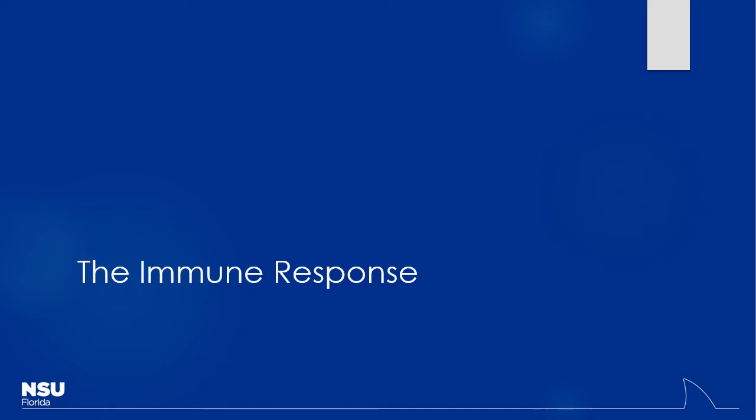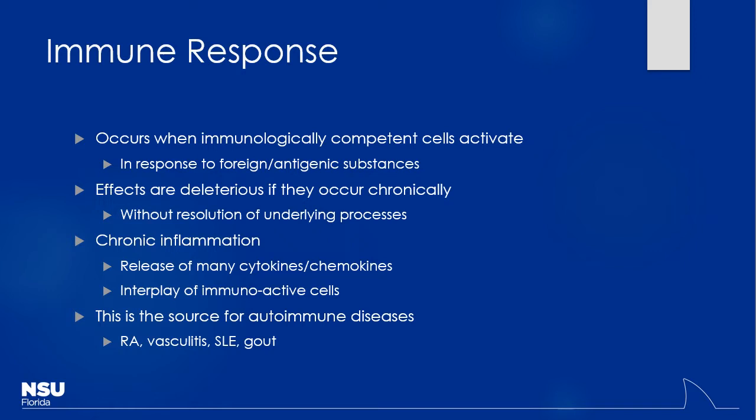So the immune response — we've probably talked about this ad nauseum in the past. What's the main pathophysiologic issue with rheumatoid arthritis? The body is basically attacking itself, right? Just like we talked about in GI with UC or Crohn's disease, the body is inappropriately attacking itself. Same thing is happening here with rheumatoid arthritis — attacking the joints primarily, though there can be other manifestations outside of that.